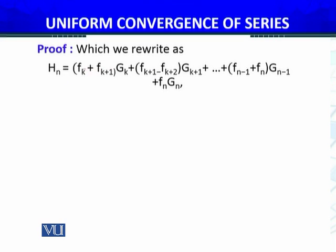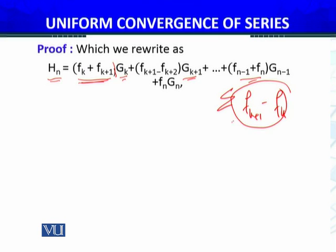So this second sequence of partial sums — this observation — I have plugged in. Wherever the sequence of partial sums had small gk, wherever small g(k+1) appeared, I replaced it with capital G(k+1) minus capital Gk. Wherever only gk appeared, it equals that expression. So I have rewritten the sequence of partial sums Hn. This is the trick I told you about — I will try to rewrite the sequence of partial sums such that the summation of f(k+1) minus f(k), which is given as absolutely uniformly convergent in the hypothesis, appears — which I have managed here.